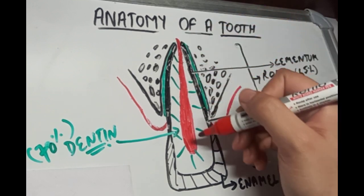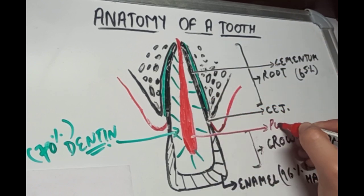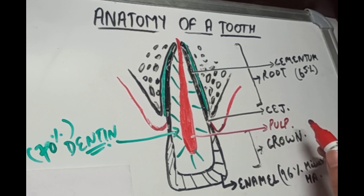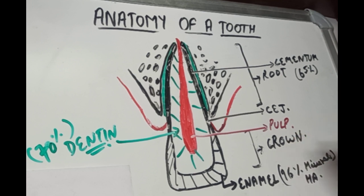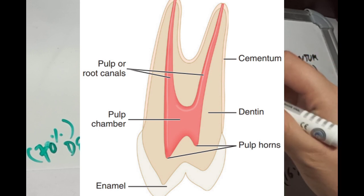The soft tissue in the tooth is the pulp tissue. This pulp tissue contains all the nerves, connective tissue, and blood vessels to the teeth that keep the teeth alive and healthy. The pulp tissue in the crown portion is called the pulp chamber, and that in the roots is called the pulp canal. These are the pulp horns, which extend up from the pulp chamber. The pulp chamber and pulp canal are continuous with each other and are collectively called the pulp cavity.